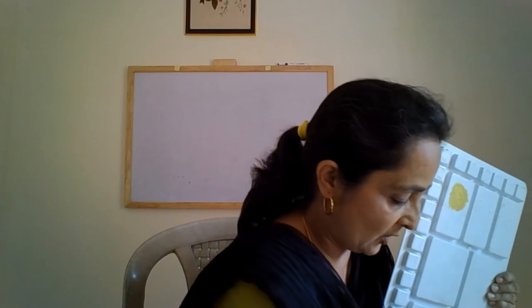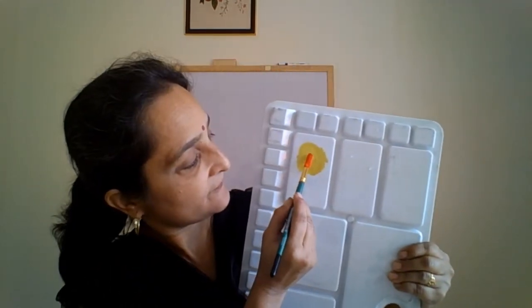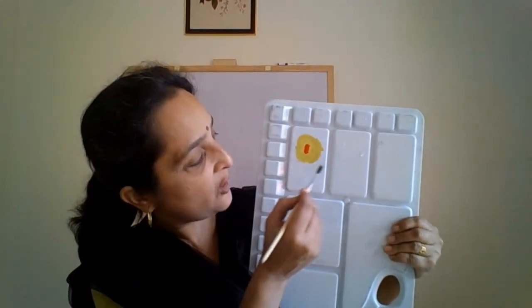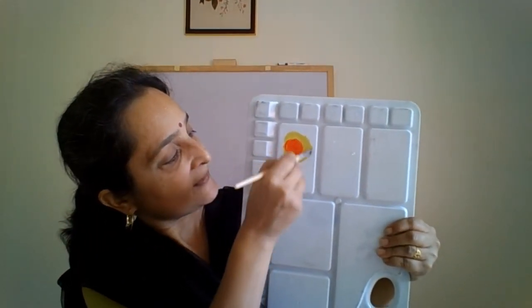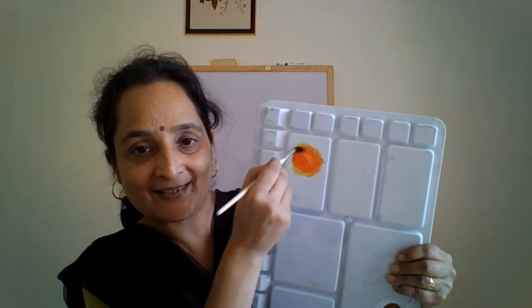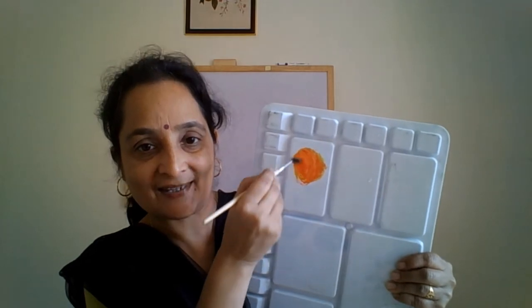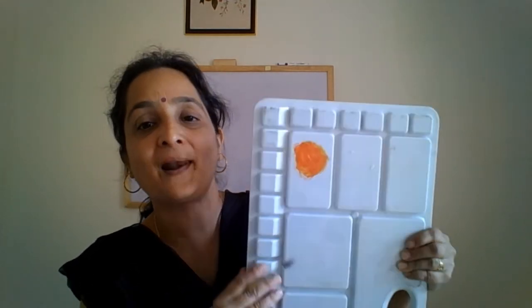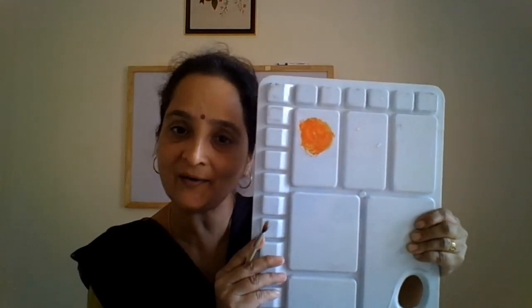Now let's put a tinge of red to it. Now I have added red color to the yellow color. Now let's see which color is formed. Does it look like orange? Yes, this is orange. So children, red plus yellow makes orange.